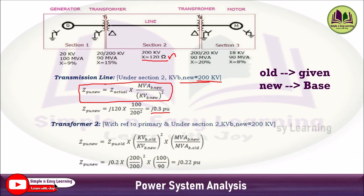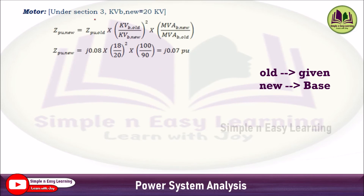For transformer T2, the high-voltage side (200 kV) is connected under Section 2. Applying the formula: j0.2 × (200/200)² × (100/90). The given value is 20% = j0.2, the given and base KV are both 200, base MVA is 100, and given MVA is 90. This gives j0.22 per unit.